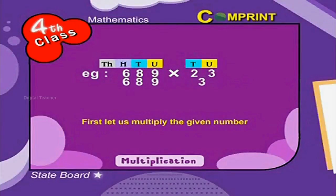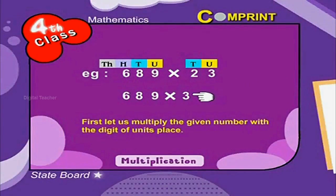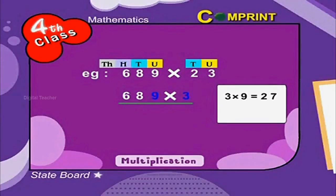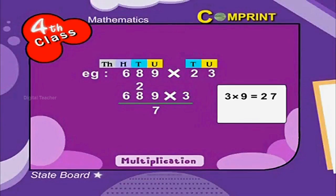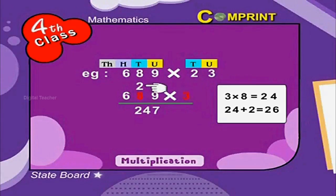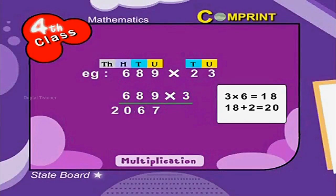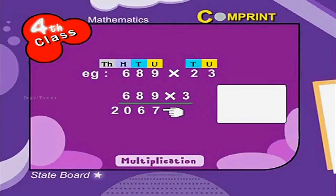First, let us multiply the given number with the digit in the units place. That is 689 into 3. 3 into 9 is equal to 27. 2 is carried to the tens place. Now 3 into 8 is equal to 24, plus 2 is equal to 26. Here 2 is carried to the hundreds place. Now 3 into 6 is equal to 18, plus 2 is equal to 20. So the product is 2067.